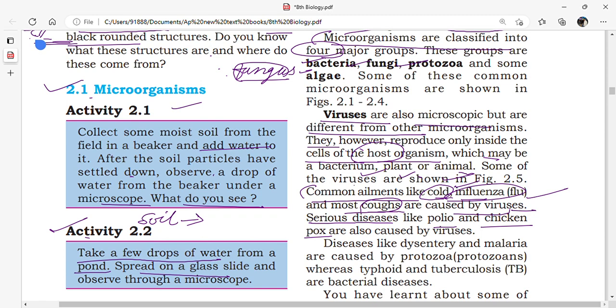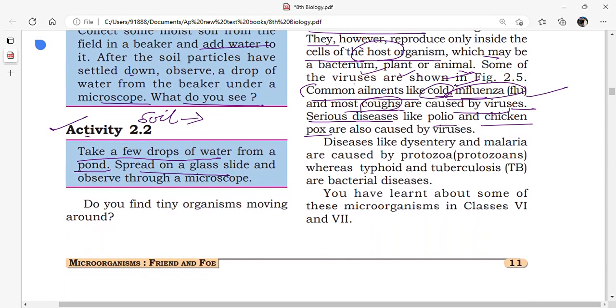Diseases like dysentery and malaria are caused by protozoa. Examples of protozoans in your textbook are Amoeba and Paramecium.